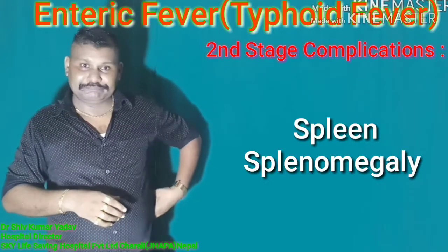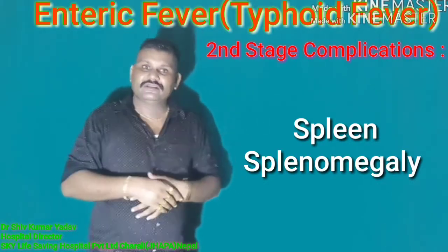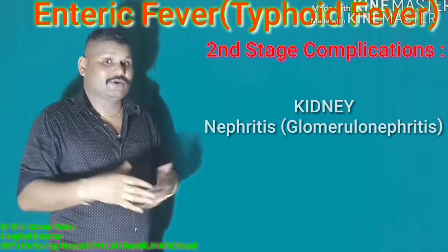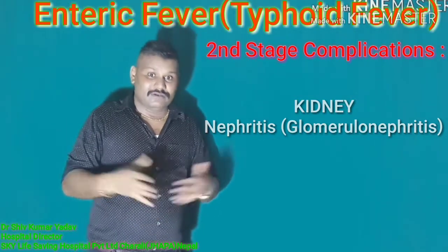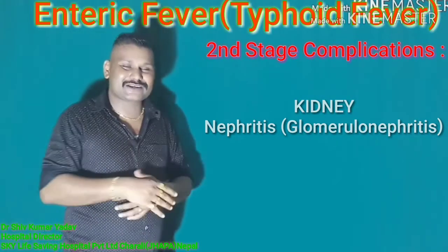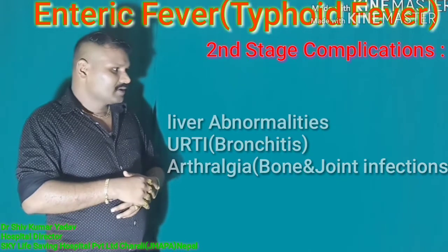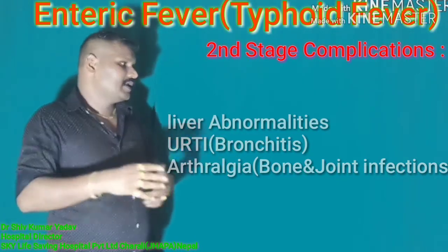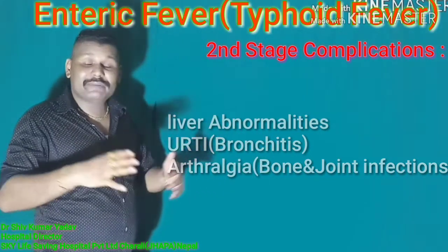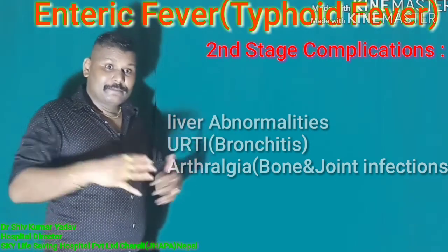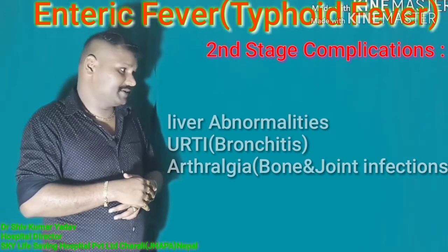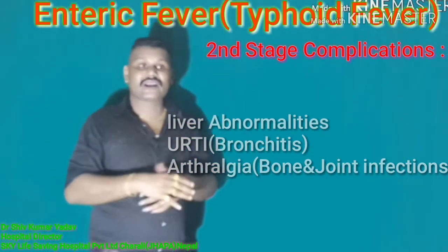In the spleen, we may see splenomegaly. In the kidney, we may see glomerulonephritis; the most prominent sign is RBC cast presence. Liver abnormalities and upper respiratory tract infection also occur. Upper respiratory tract complications may include weak chest, bronchitis, arthralgia, and bone and joint pain.